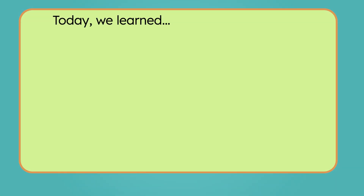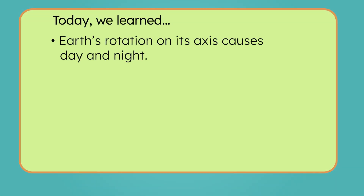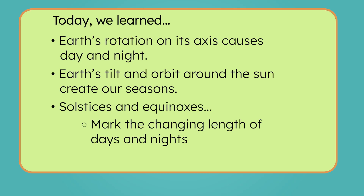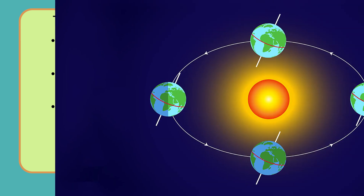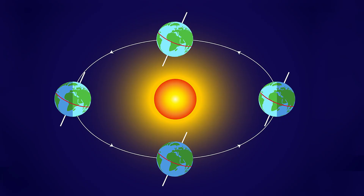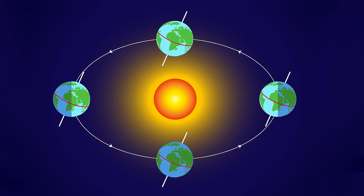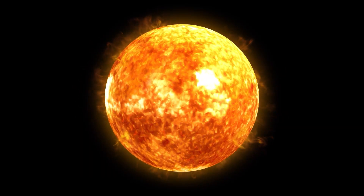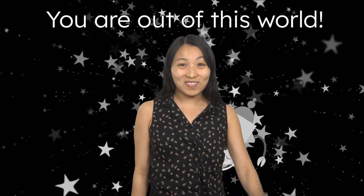Let's quickly review what we've learned today. Earth's rotation on its axis causes day and night, while its tilt and orbit around the sun create our seasons. Solstices and equinoxes mark the changing lengths of days and nights and the shifts in our seasons. You can learn more in the additional activities for this lesson. Next time we'll be learning about our solar system's home star, the sun. Until then, keep looking up at the stars and remember, you are out of this world! See you soon!